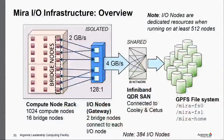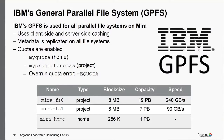On Mira, the IO path passes first through bridge nodes directly connected to IO gateway nodes, and those IO gateway nodes are connected through a shared InfiniBand network to the GPFS file systems. There is a 128-nodes-to-one IO ratio. If you're running on at least 512 nodes, you have dedicated IO resources, making it much easier to get isolated IO performance measurements without noise from other jobs.